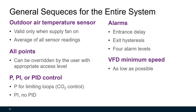In this guideline, there is a section describing general sequences applicable to all systems. For outdoor air temperature sensor readings, they are valid only when the supply fan is on, and we should use the average of all sensor readings. All points should be able to be overwritten by the user with appropriate access level, mostly for emergency, testing, or debugging purposes. For control loops, only proportional or proportional-integral controls are recommended. Proportional control is only recommended for controlling CO2 levels, and PID loop control is not recommended for HVAC system control.